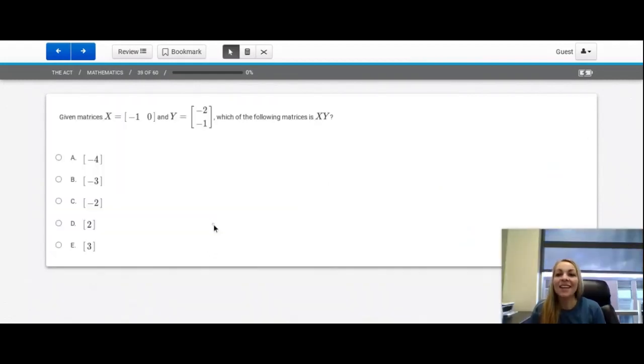Question number 39. Given matrices X equals (-1, 0) and Y equals (-2, -1), which of the following matrices is XY? This means that we're going to multiply these two matrices together. To do this multiplication, we're going to take this first spot and multiply it by this top spot, -1 times -2. We are going to add that to the second part here and the bottom part here, 0 times -1. -1 times -2 is 2 plus 0 times -1, which is 0, leaves me with an answer of 2.